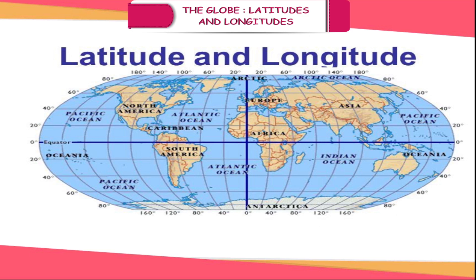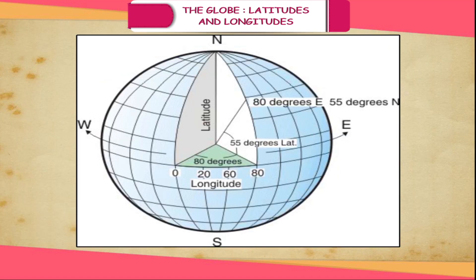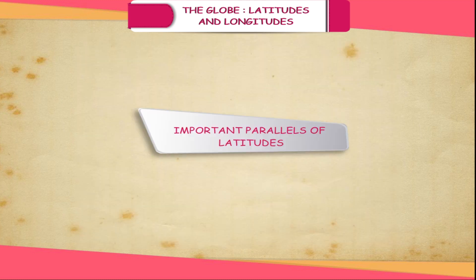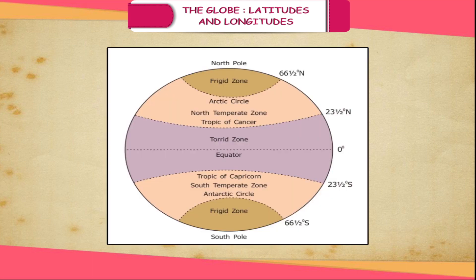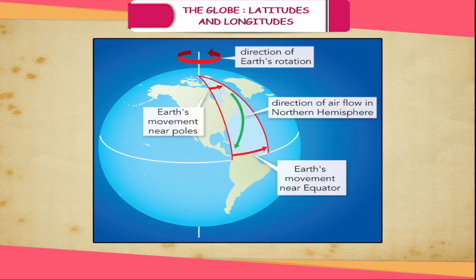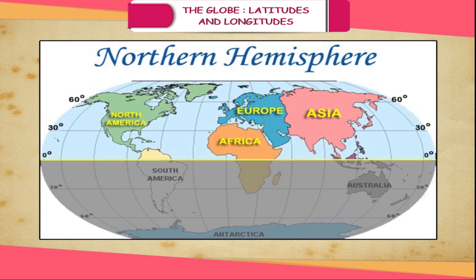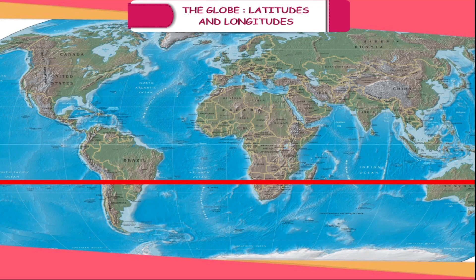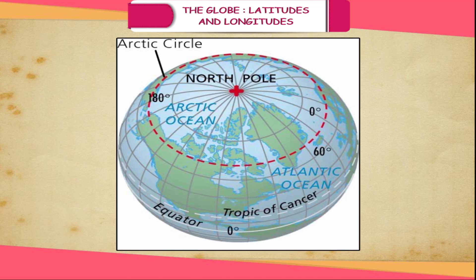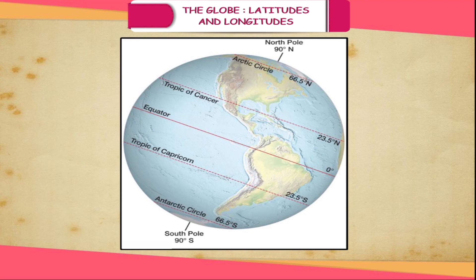All parallels north of the equator are called north latitudes; similarly, all parallels south of the equator are called south latitudes. The latitude of a place is its angular distance north or south of the equator. There are four important parallels of latitudes: (a) Tropic of Cancer — 23.5 degrees North in the Northern Hemisphere; (b) Tropic of Capricorn — 23.5 degrees South in the Southern Hemisphere; (c) Arctic Circle — 66.5 degrees North of the equator; (d) Antarctic Circle — 66.5 degrees South of the equator.